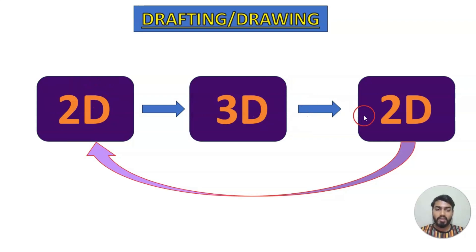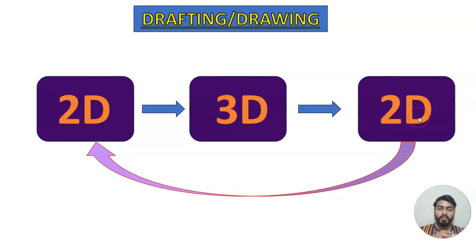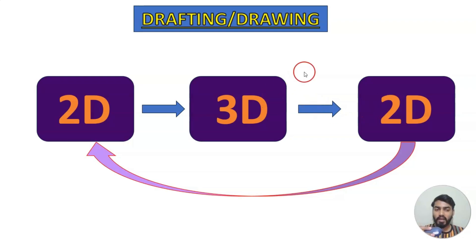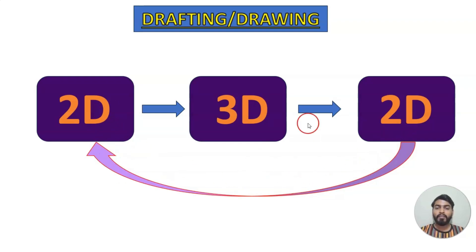So why we convert 3D back to 2D: different section views, holes, and all specifications are shown in 2D. We use 2D to create the 3D model, and then again convert that 3D model back into 2D drawings. If any mistake has been made in the 3D model, we cannot see it from outside. So we convert to 2D and cross-check this new 2D drawing against the original 2D drawing — if they match, our 3D model is correct. That is the concept of drafting.